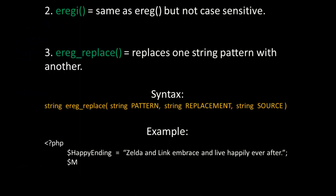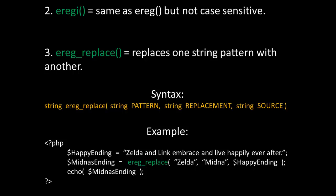Ereg_i functions in a similar fashion as ereg, but it is not case sensitive. Ereg_replace replaces one string pattern with another. The syntax for ereg_replace takes three arguments: the first is the string or pattern to match, the second is the replacement string, and the third is the source string. For example, we have the variable 'happy_ending' set to 'Zelda and Link embrace and live happily ever after', and a second variable 'Midnas_ending'.